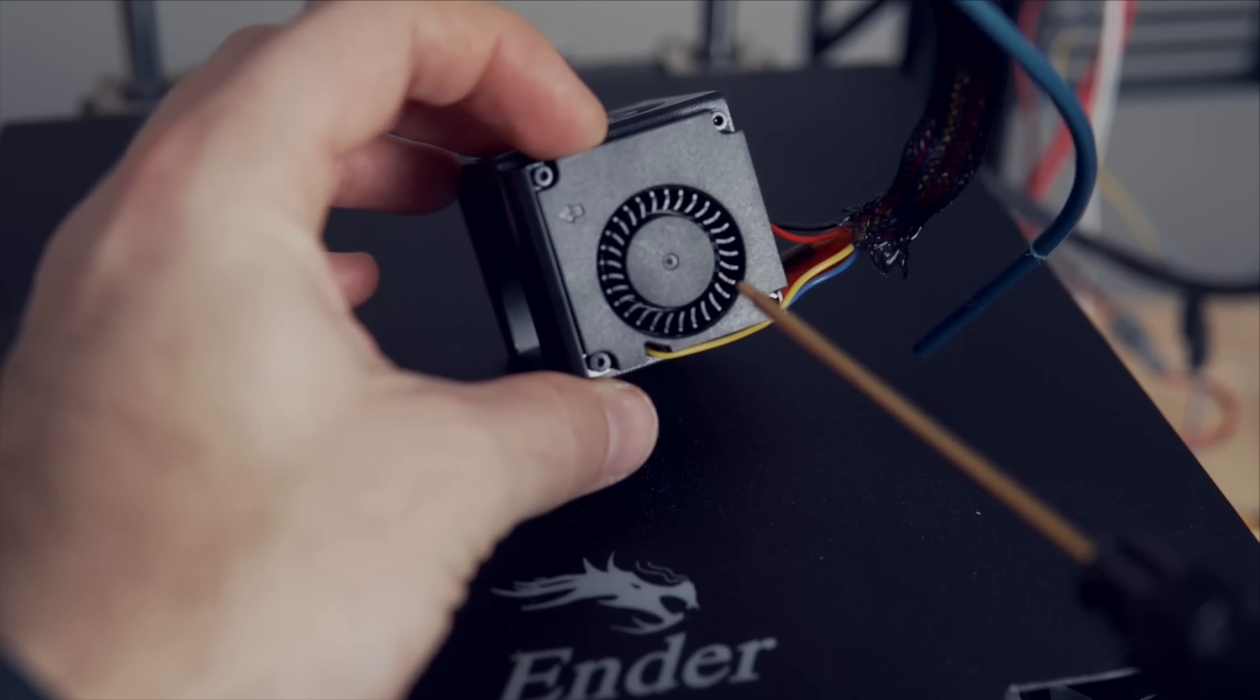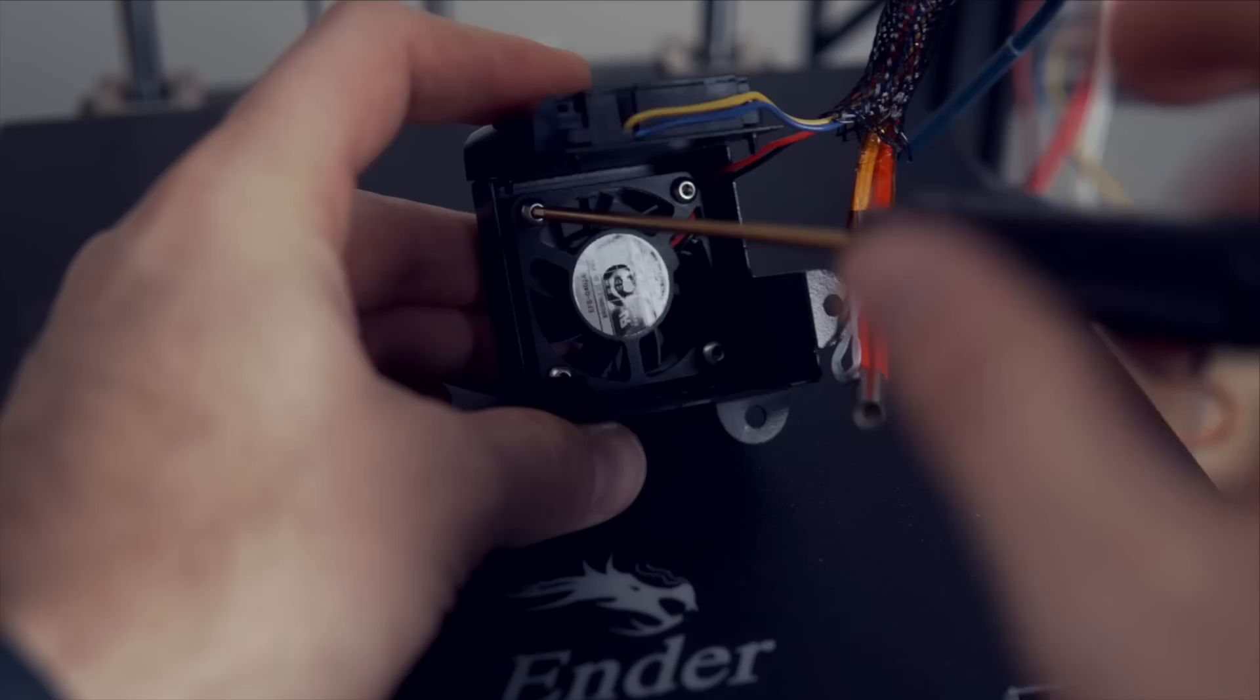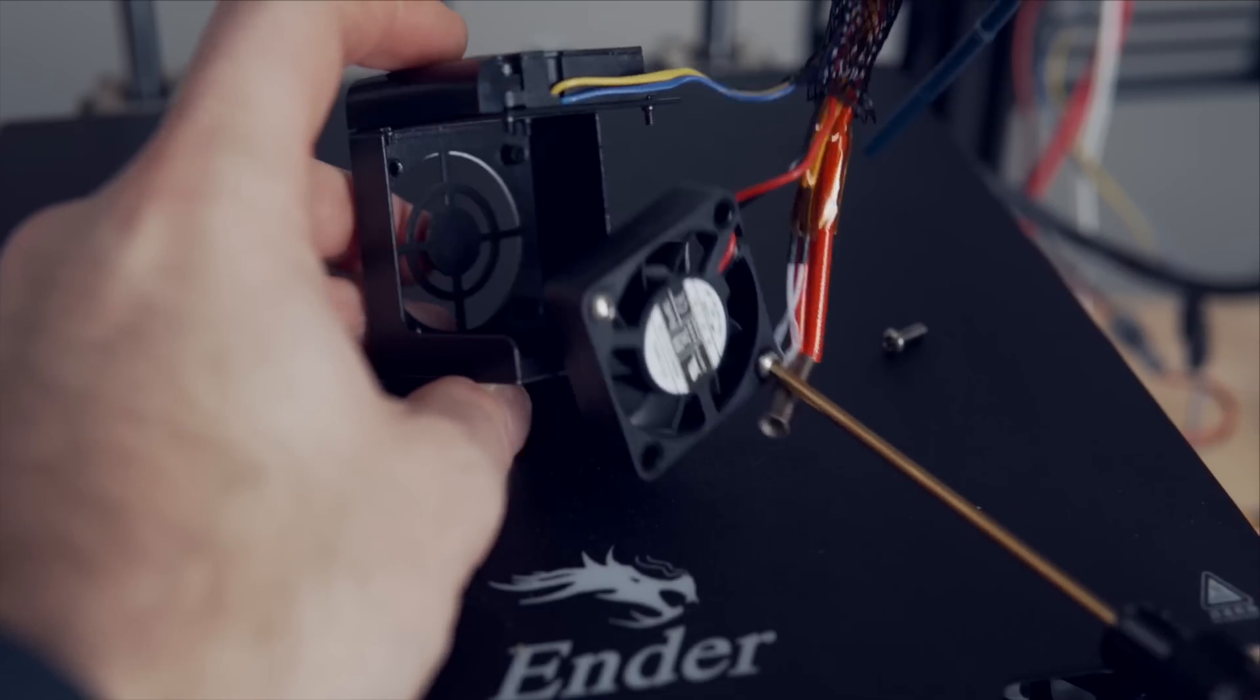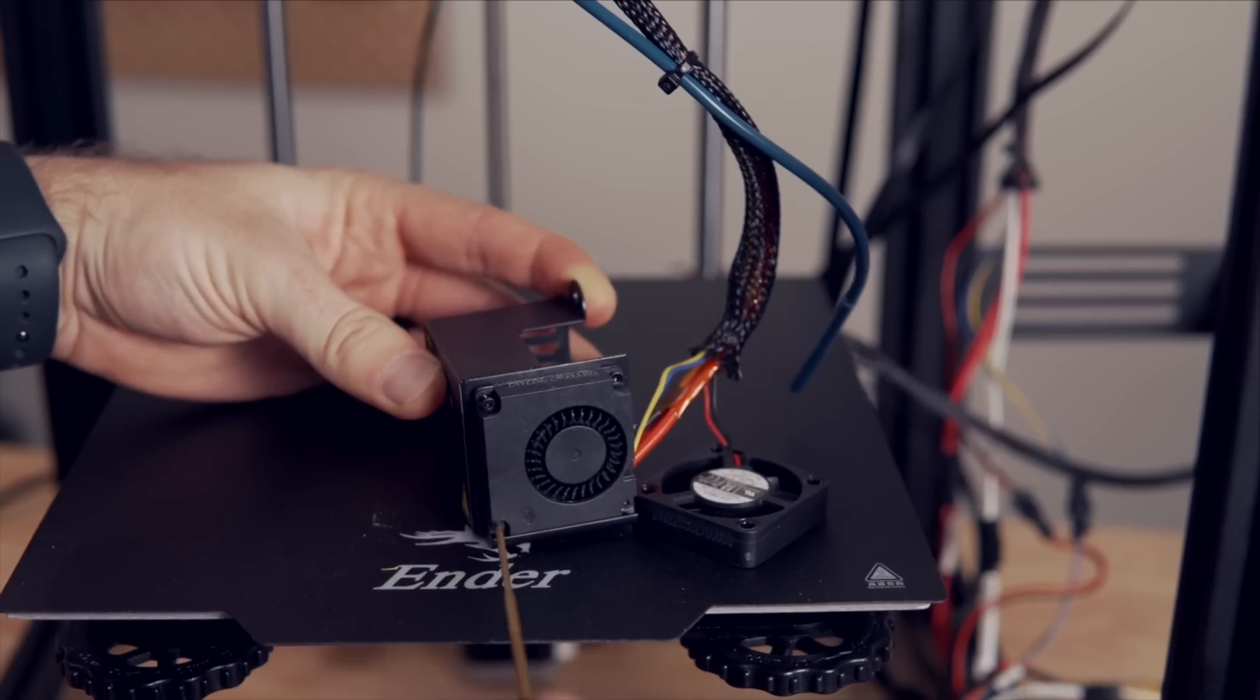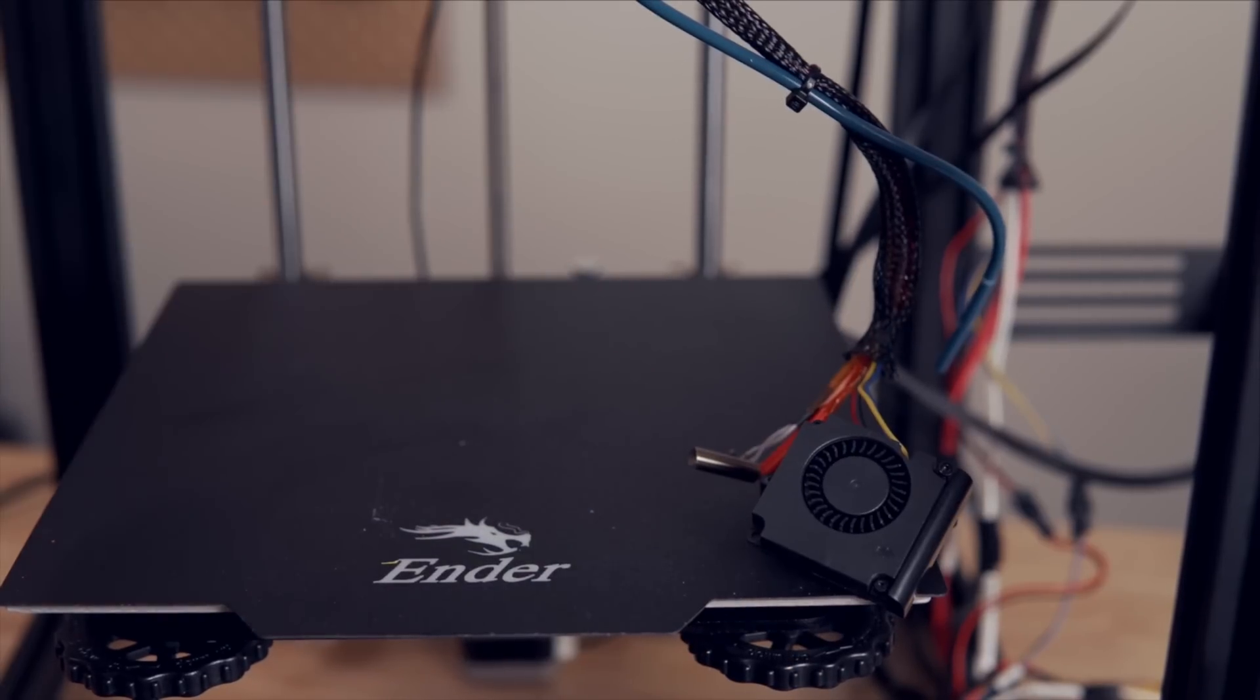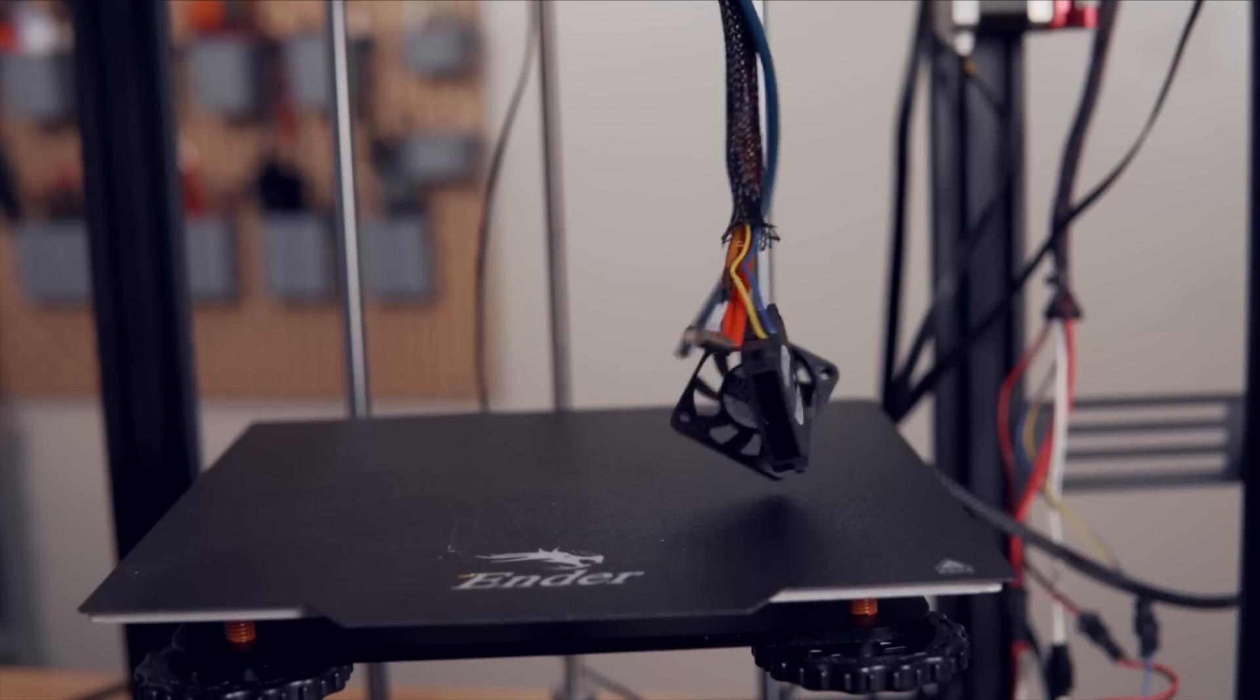Turning our attention to the fan housing, we're going to be using both the layer cooling fan and the heatsink fan for the NG extruder, so we need to remove the four screws from both of these. Don't worry about keeping any of the screws, we're going to be using completely different screws when we install these onto the NG. We also don't need the fan housing or the fan shroud, just the fans hanging with the rest of the wire harness.